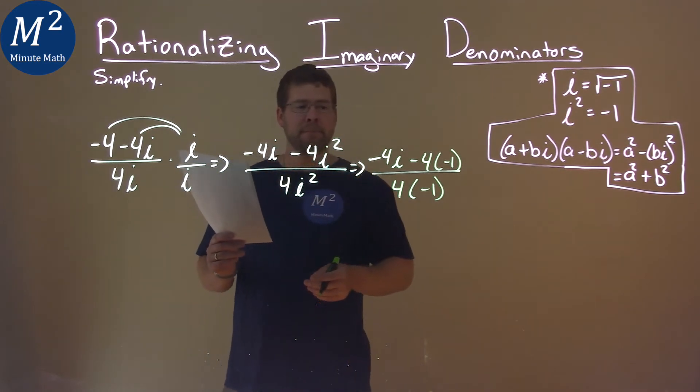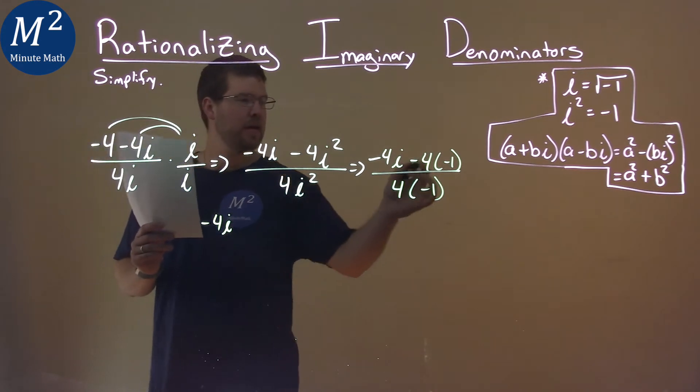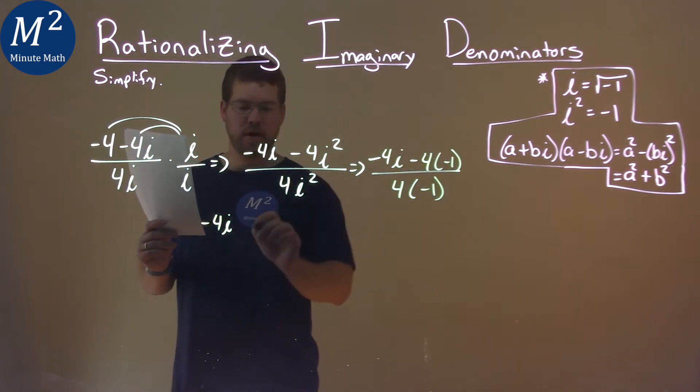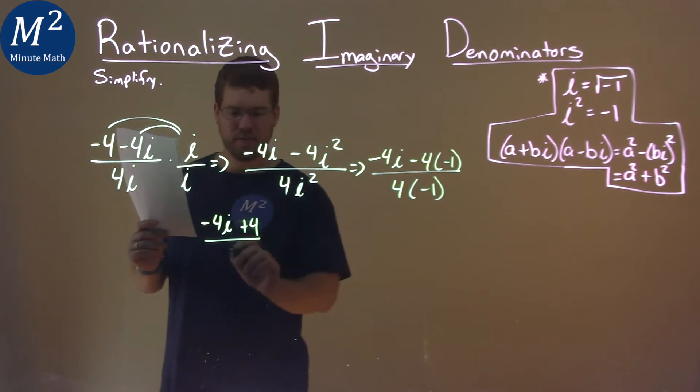All right. Let's simplify. Negative 4i. Negative 4 times negative 1 is positive 4. Over 4 times negative 1 is negative 4.